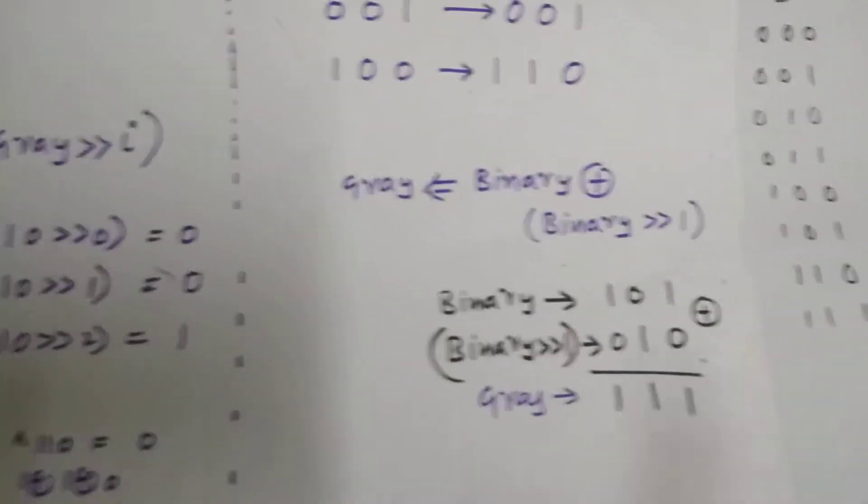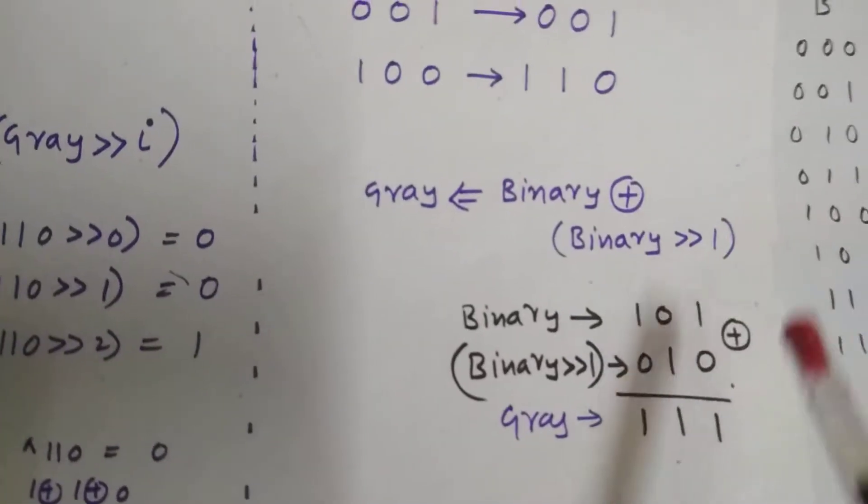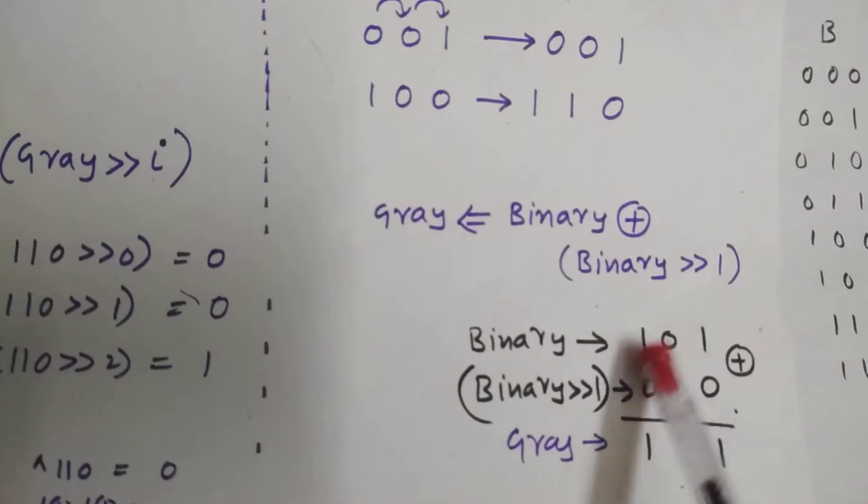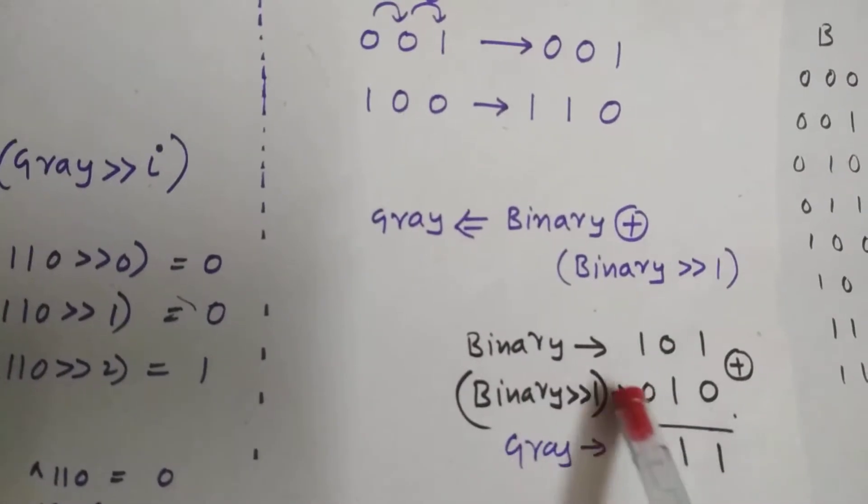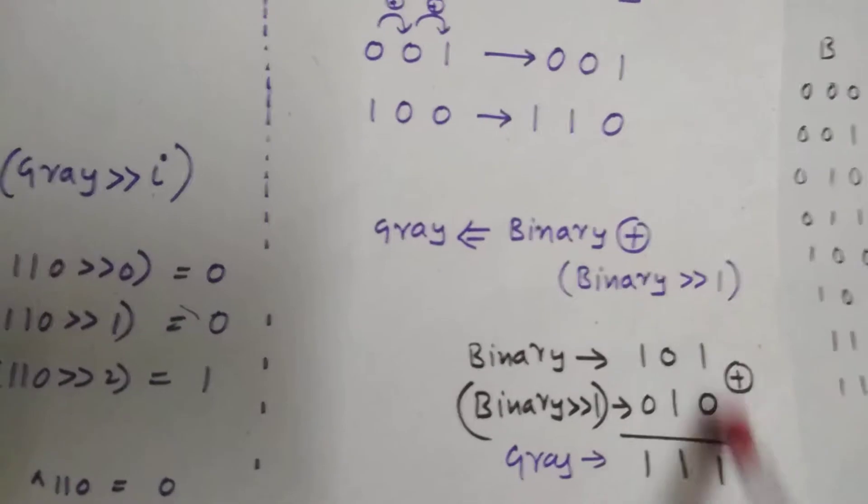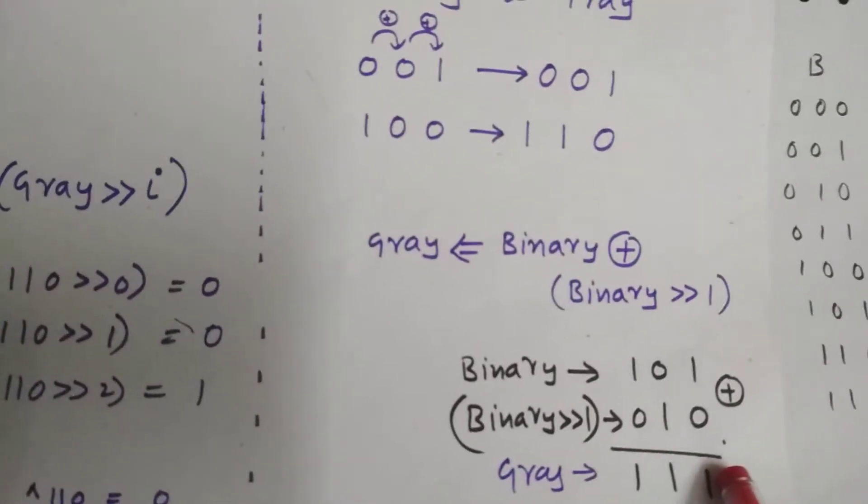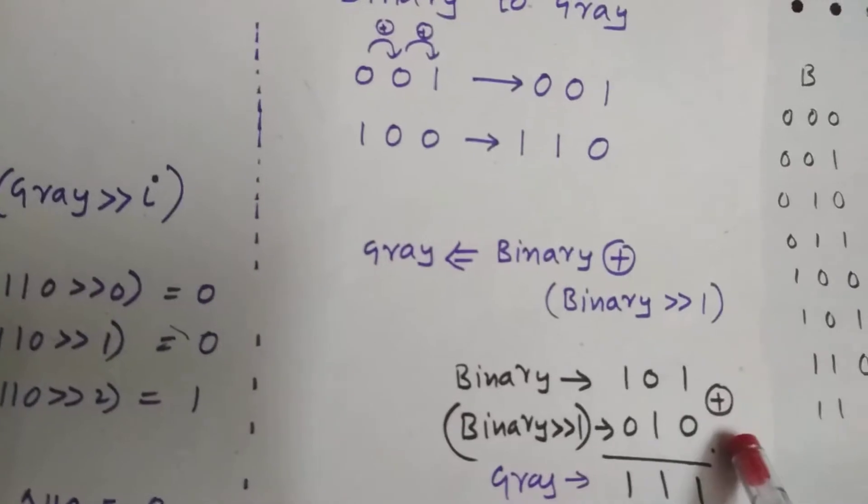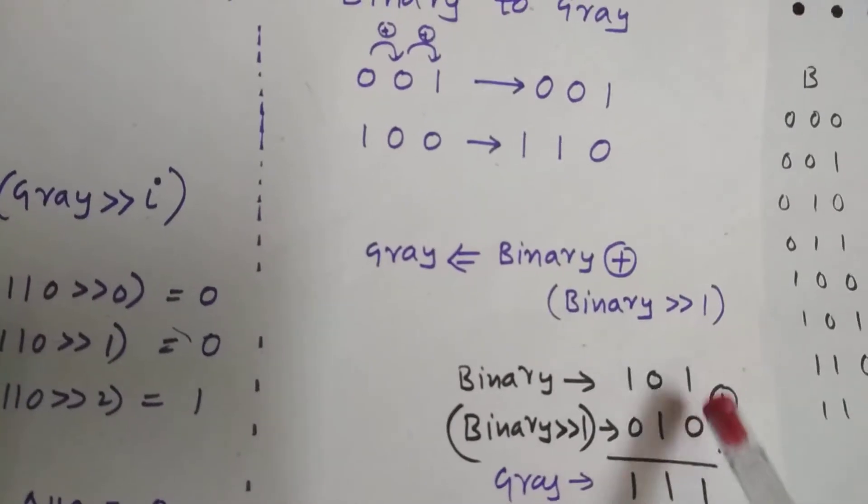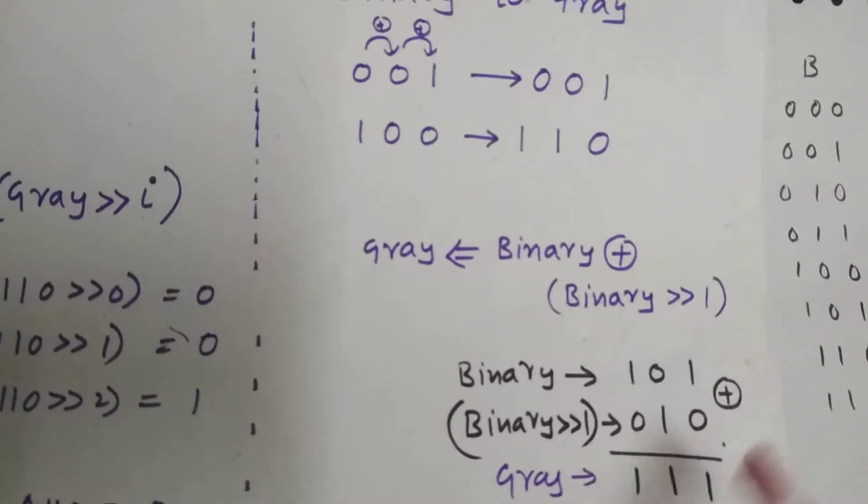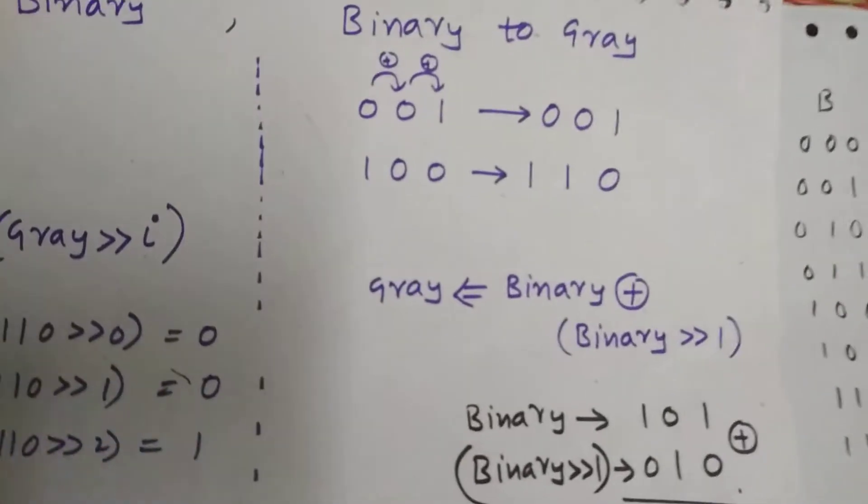I'm going to show you an example. This is 5 in binary, this is 5 in Gray. What I'm going to do is shift this 5 by 1 right shift, so 010, and XOR bitwise - not total XOR, it's bitwise XOR, not logical XOR, it's bitwise XOR. So 1 XOR 0 is 1, 0 XOR 1 is 1, 1 XOR 0 is 1. So this is binary to Gray conversion.